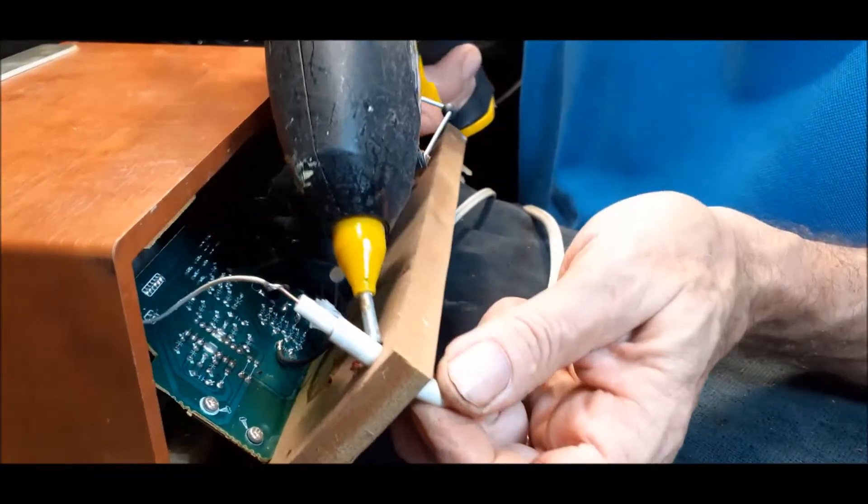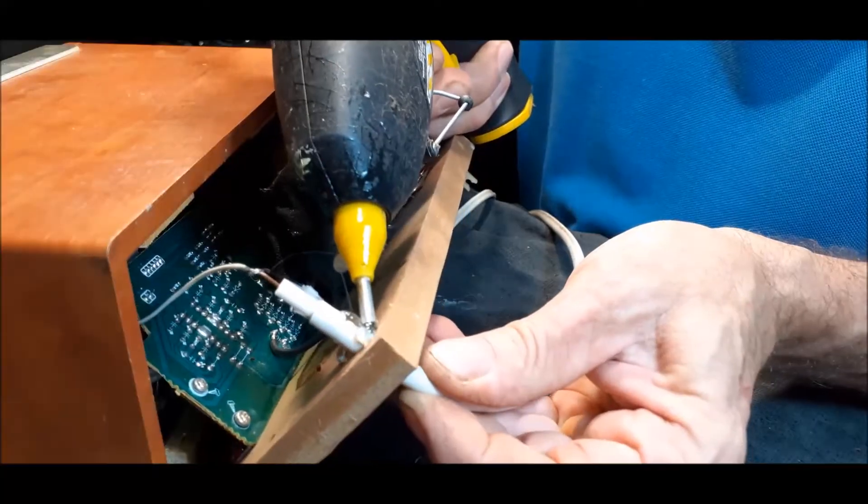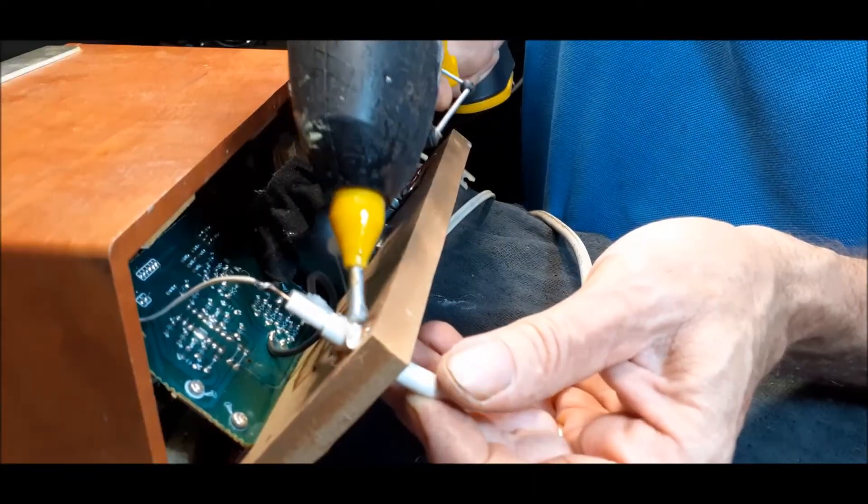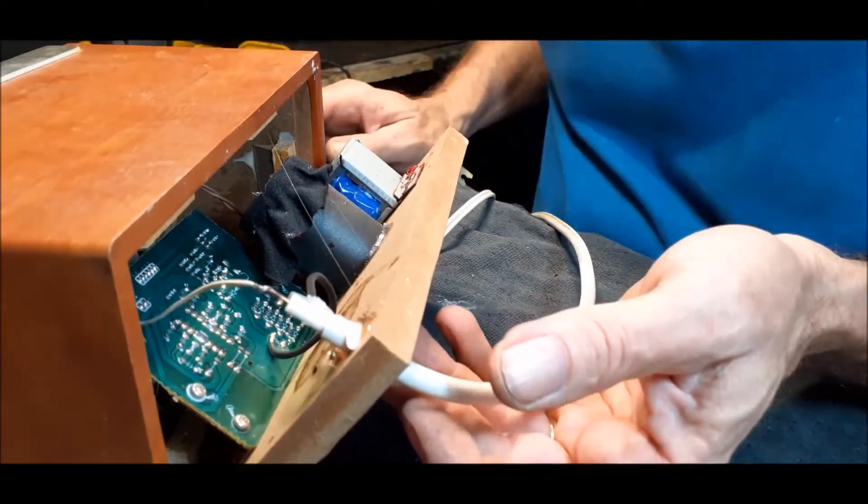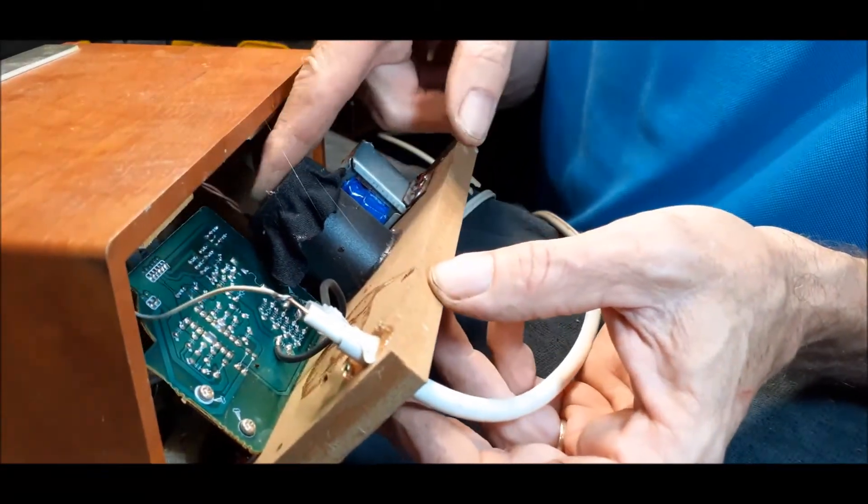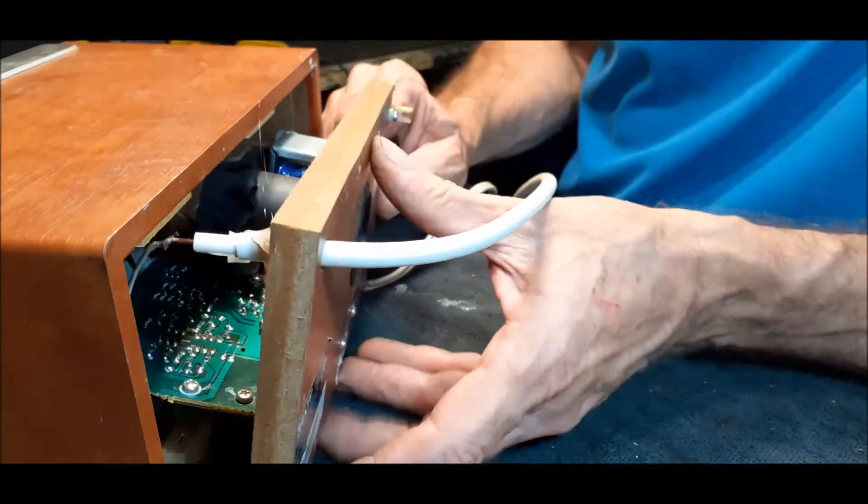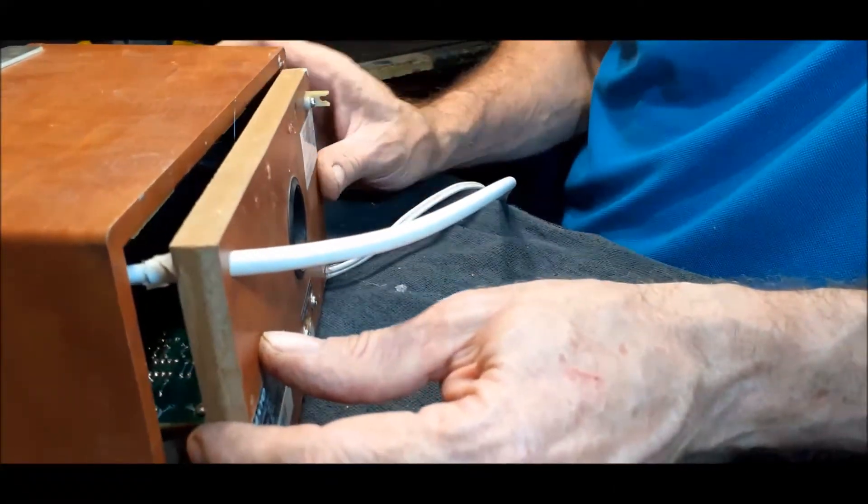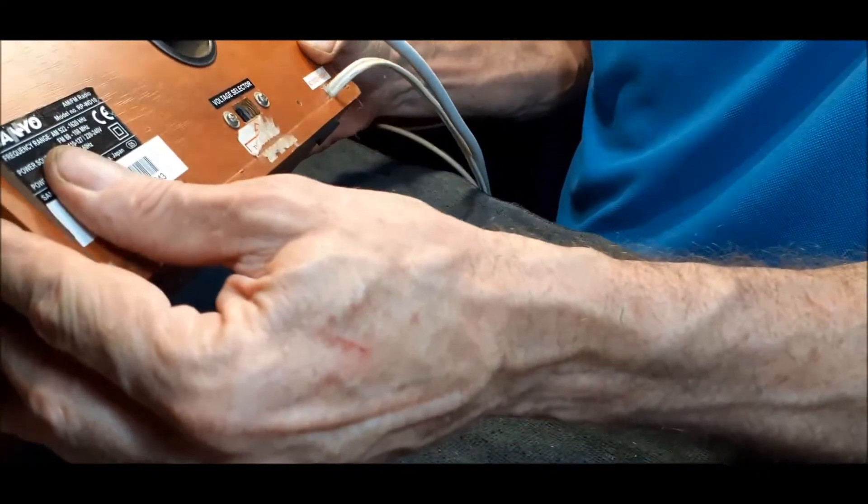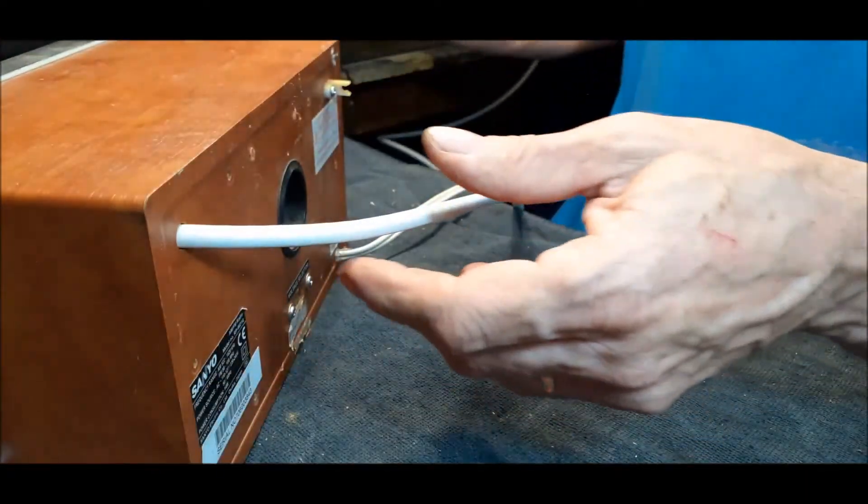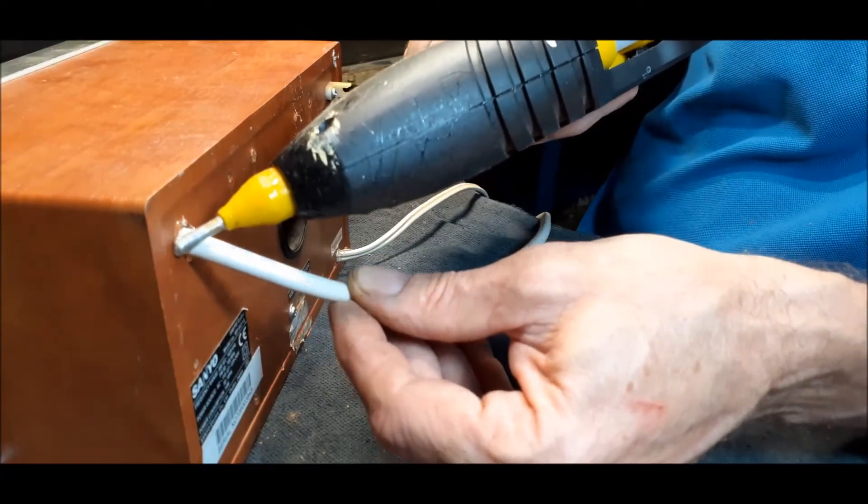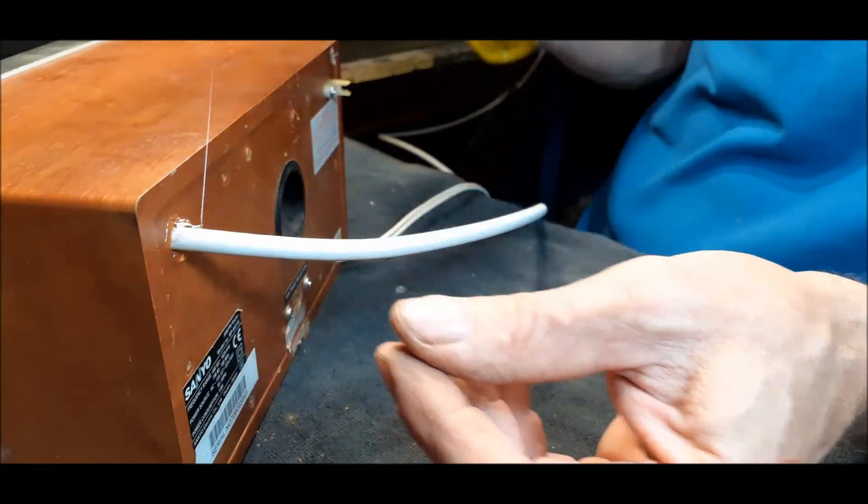We'll get some hot glue and we glue this antenna in here so it doesn't come out. And let's just dry a bit, and let's put it back. Put some glue in here also.